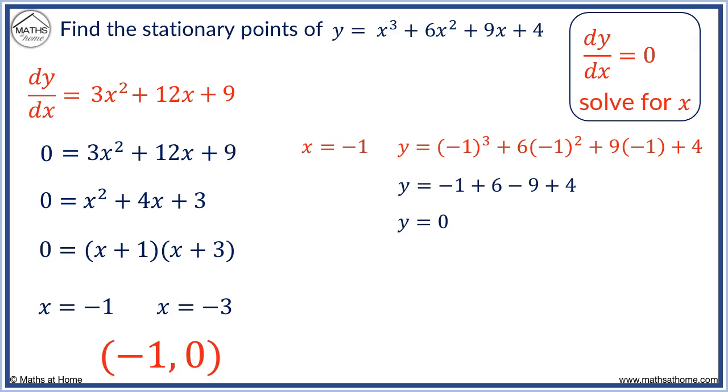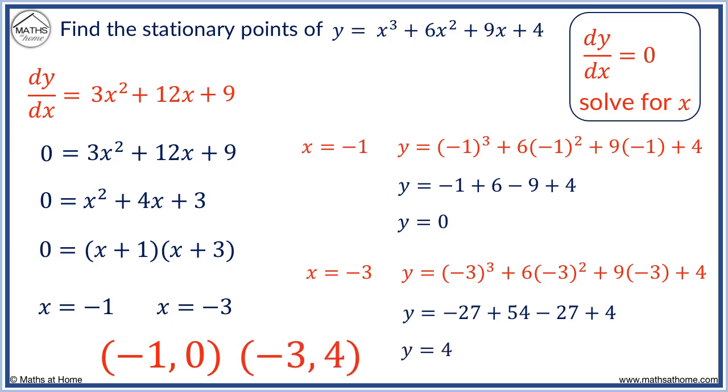When x equals minus 3, we find the y coordinate by evaluating the function when x equals minus 3. We evaluate this to get y equals 4. We have a second stationary point at x equals minus 3, y equals 4.